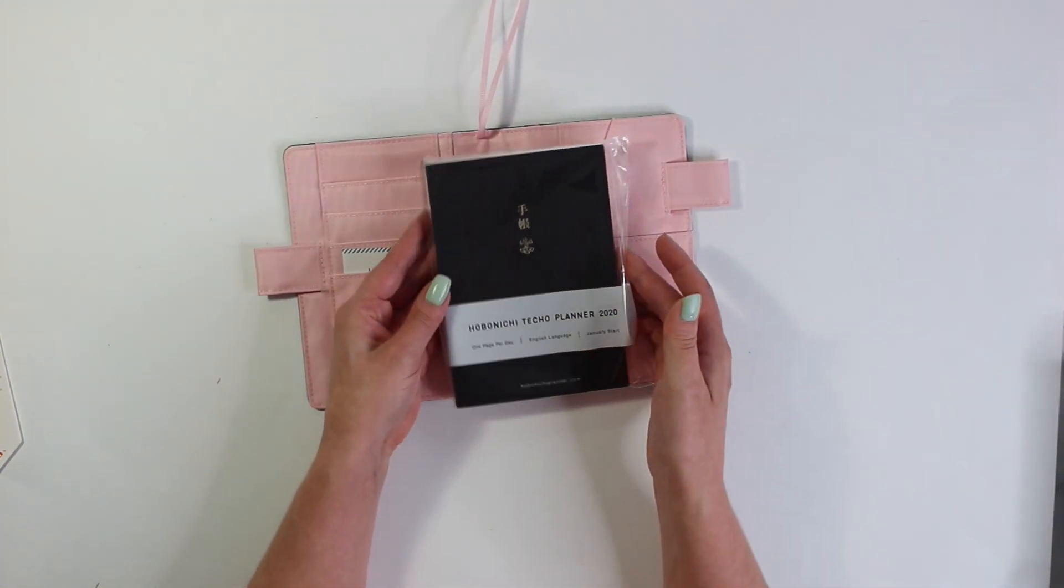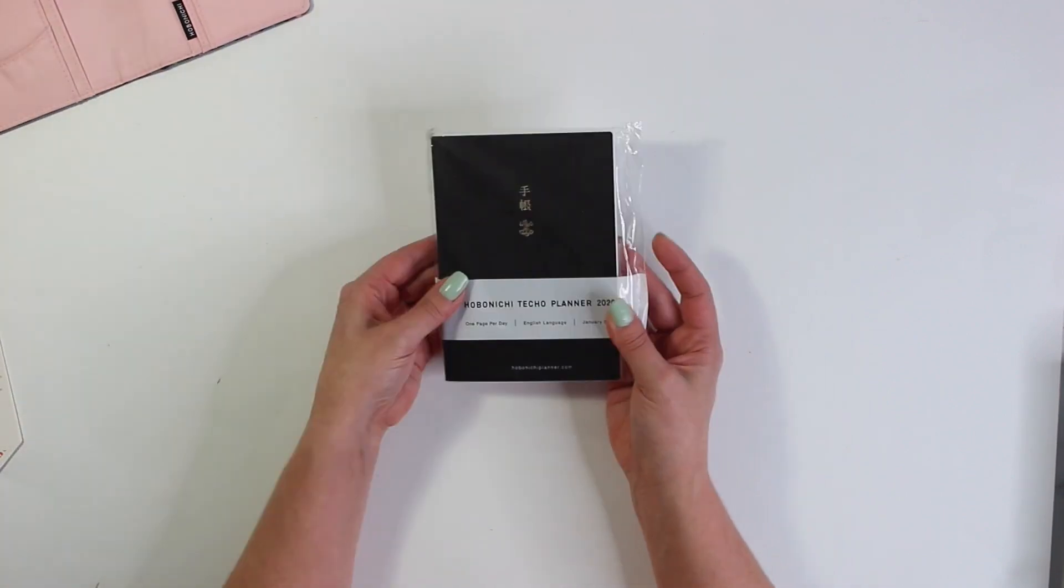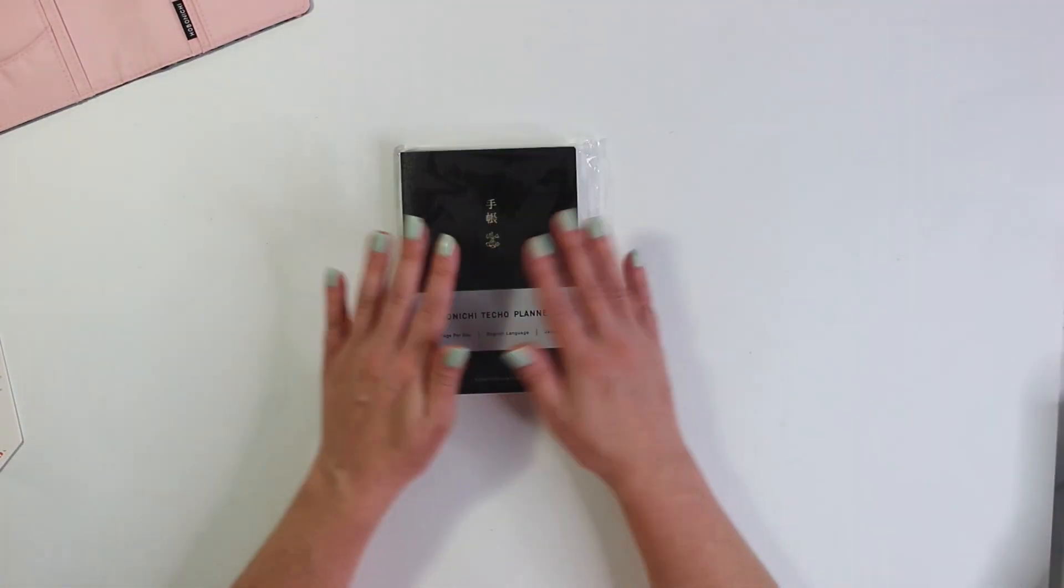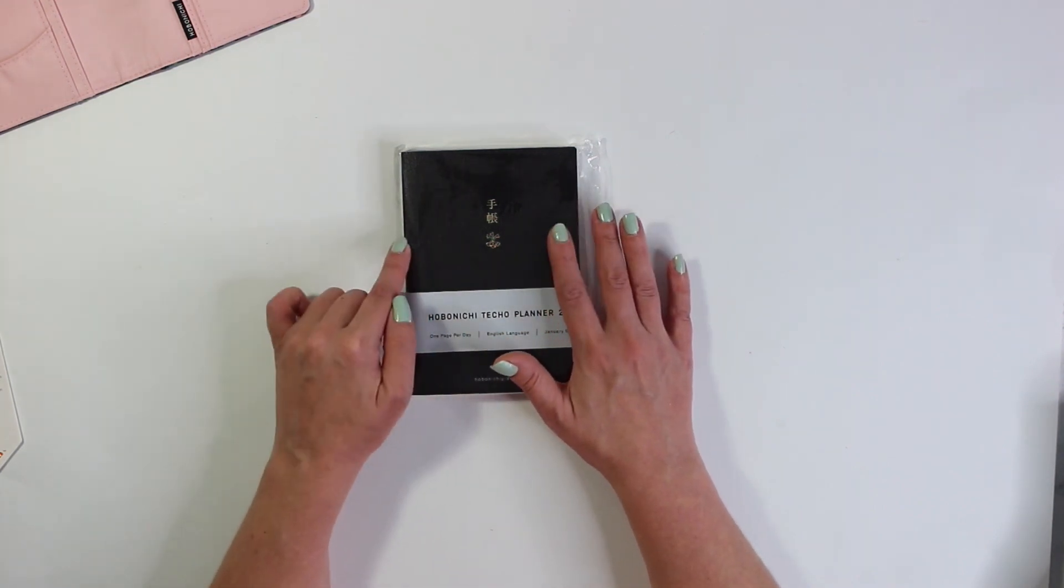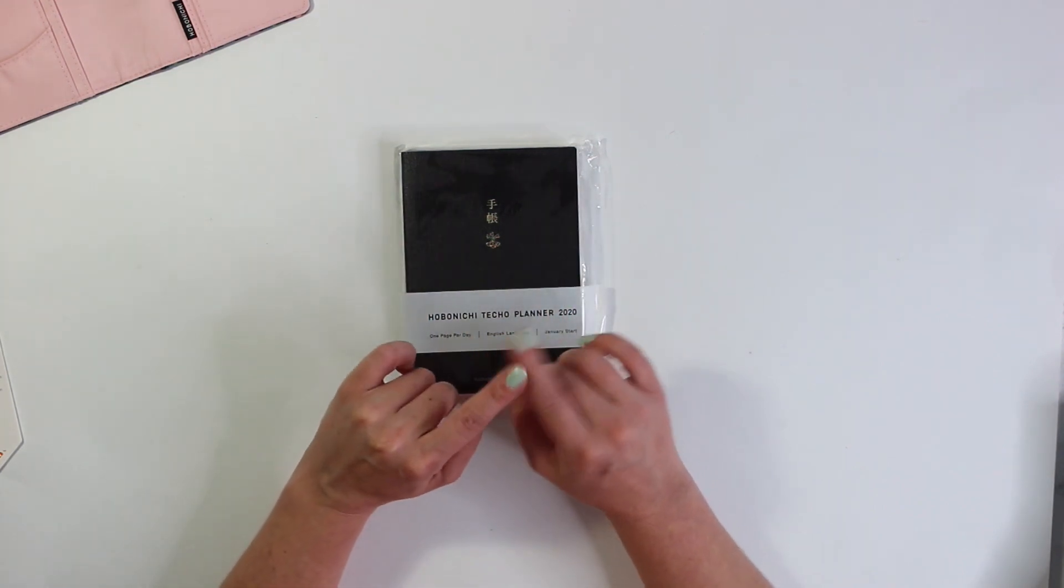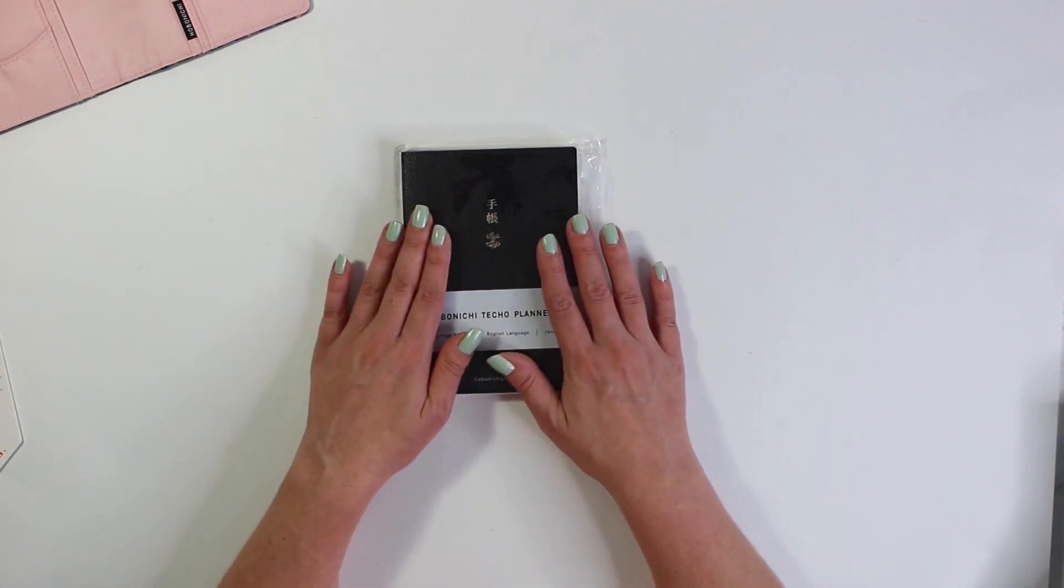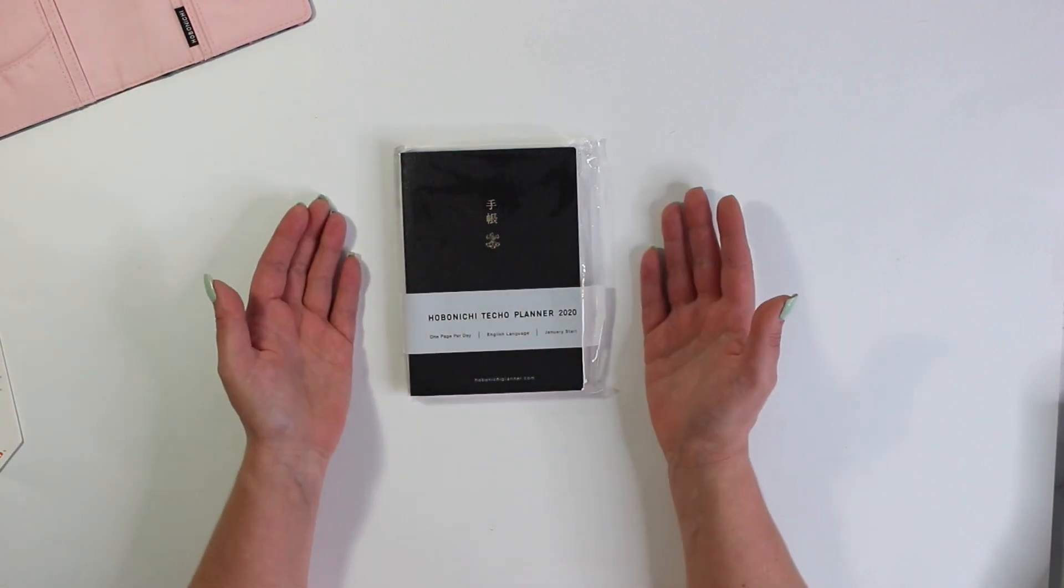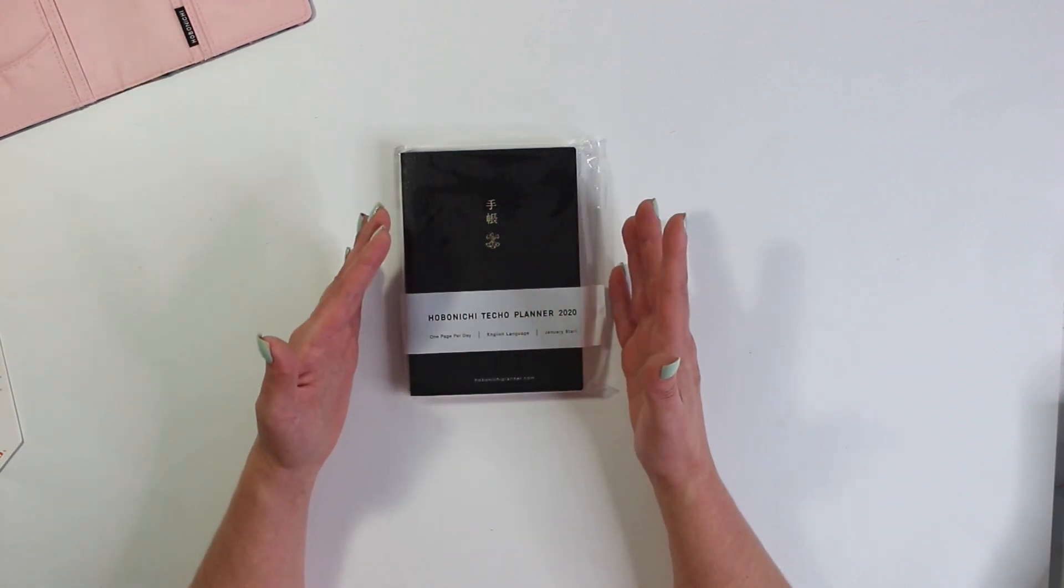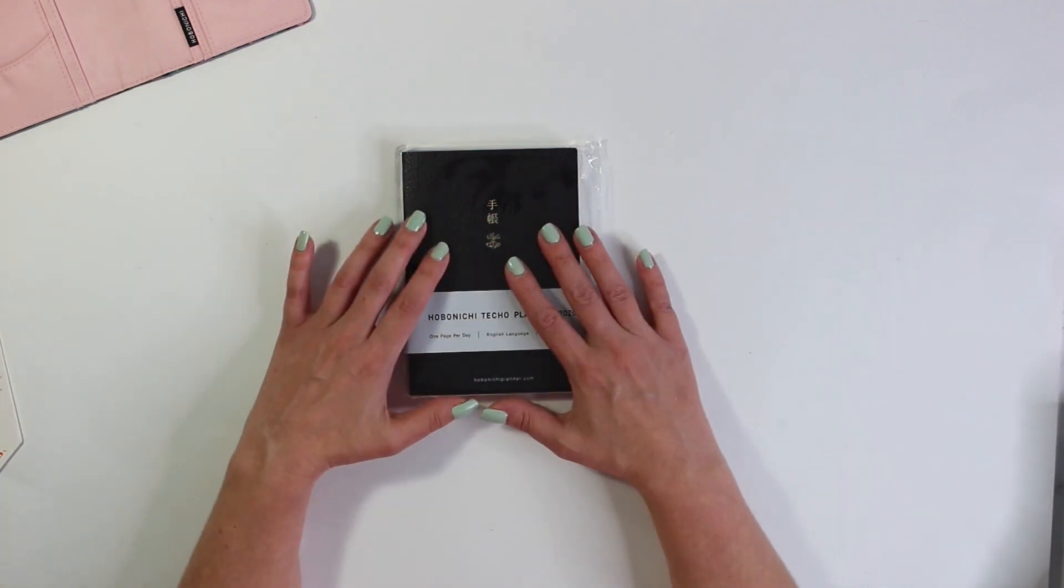So this is the Hobonichi Techo planner. Let's go ahead and move this out of the way so I can go over this little guy. Now the main difference between ordering this on the Amazon site and the Hobonichi website is of course shipping. If I was to actually order this and the cover on the Hobonichi website shipping would have been about $20 and there was no extra shipping on Amazon.